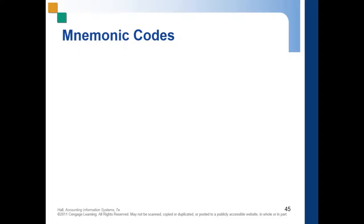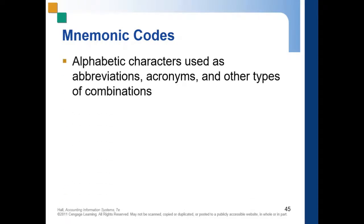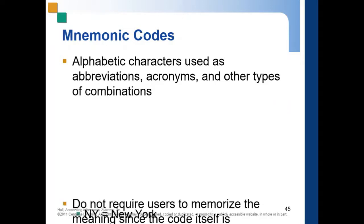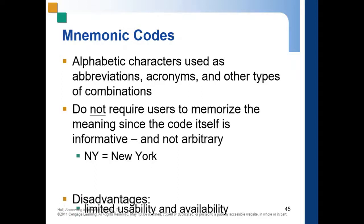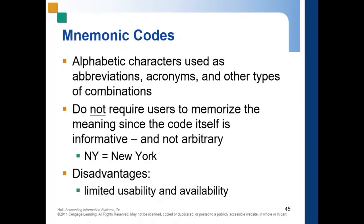Next we have the mnemonic code, which uses alphabetic characters as abbreviations, acronyms, and other types of combinations. These do not require users to memorize the meaning since the code itself is informative and not arbitrary — for example, 'NY' equals New York. The disadvantage is limited usability and availability. That ends chapter two.